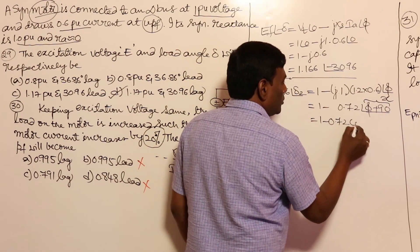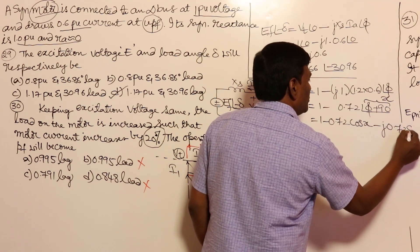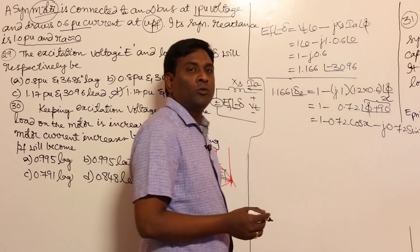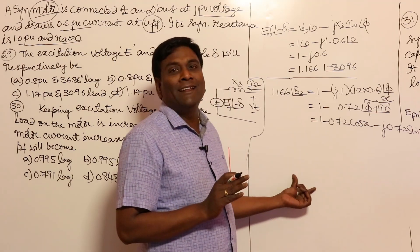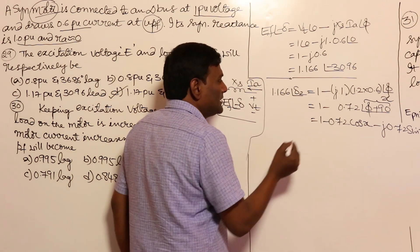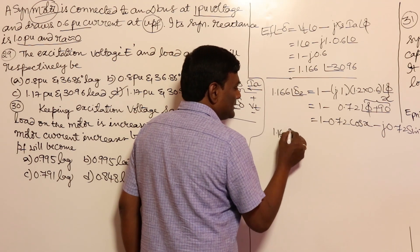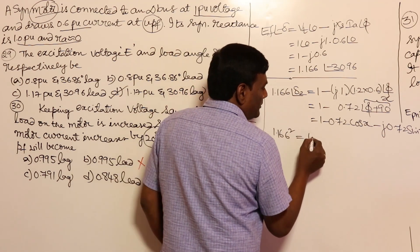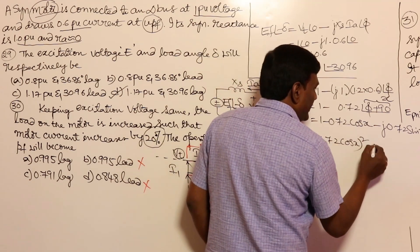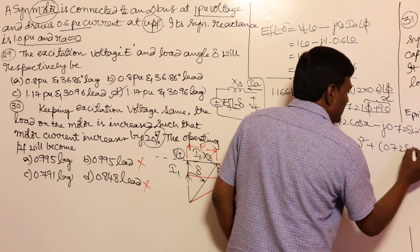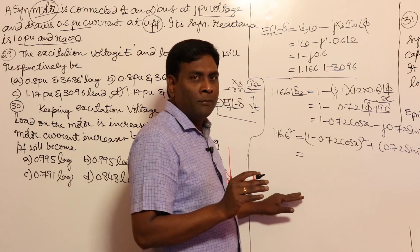So this becomes 1 minus 0.72·cos(x) minus j·0.72·sin(x), where x = phi + 90. Don't get tensed — it looks a bit lengthy but everything will get cancelled out. Now squaring both sides: 1.166² = (1 − 0.72·cos(x))² + (0.72·sin(x))².